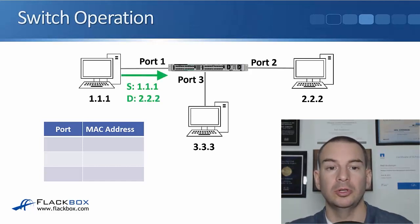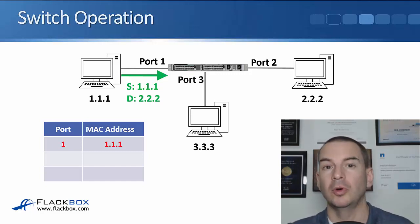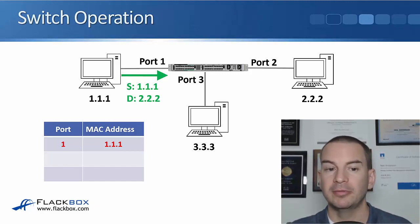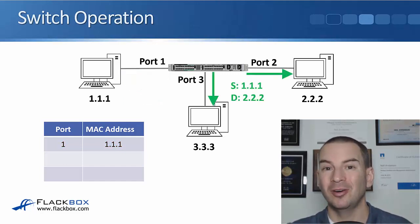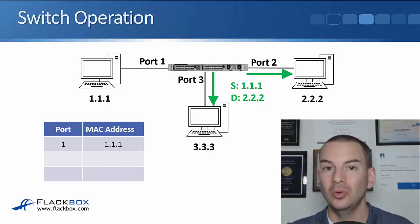The host on the left, 1.1.1, sends a frame in with the destination MAC address of 2.2.2. The switch sees a frame coming in with the source MAC of 1.1.1 and the destination MAC of 2.2.2, so it learns that 1.1.1 is reachable on port 1 and puts that information into the MAC address table.